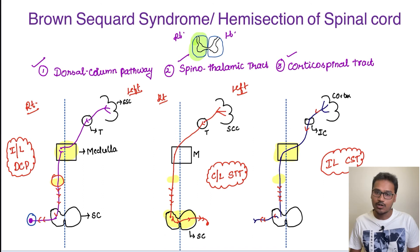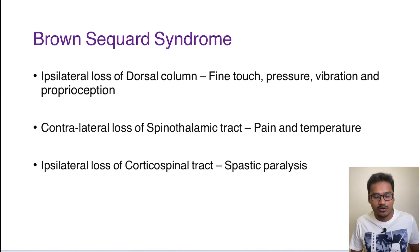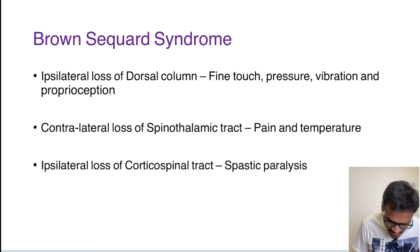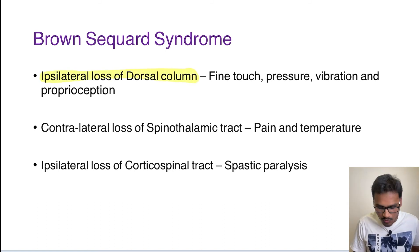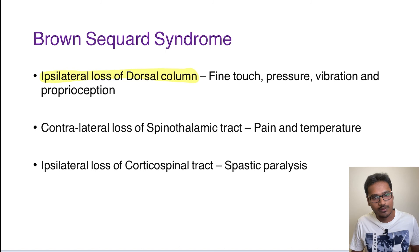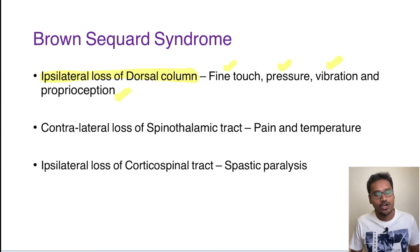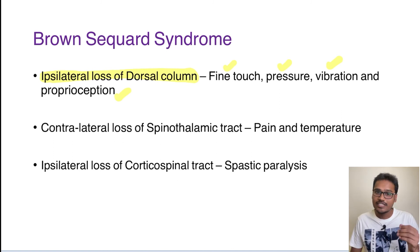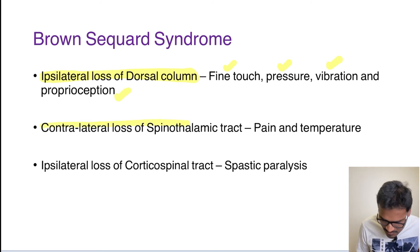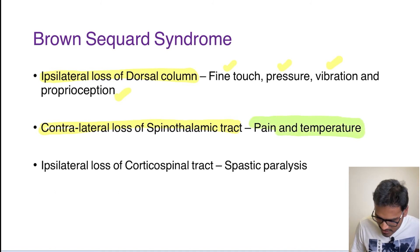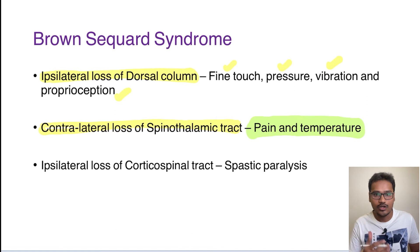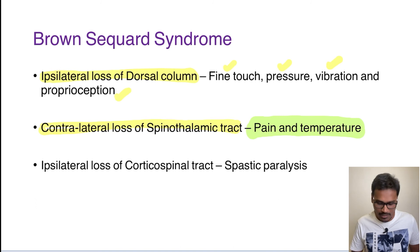This is all about Brown-Séquard syndrome. In Brown-Séquard syndrome there is ipsilateral loss of dorsal column. The sensations carried by the dorsal column are fine touch, pressure, vibration, and proprioception. The contralateral spinothalamic tract is affected — specifically pain and temperature will be affected on the contralateral side, as these are the two most important sensations carried by the spinothalamic tract.